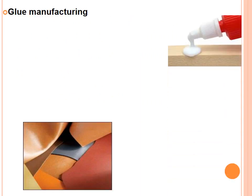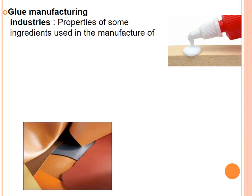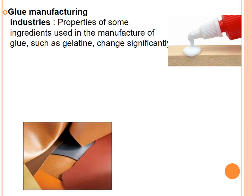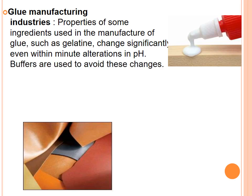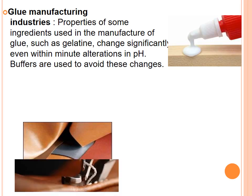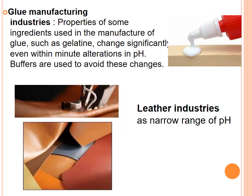In manufacturing industries, properties of some ingredients used in the manufacture of glue, such as gelatin, change significantly even with minute alterations in pH. Buffers are used to avoid these changes. Buffers are also used in leather industries, as a narrow range of pH control during tanning and dyeing determines the texture and color of the leather.